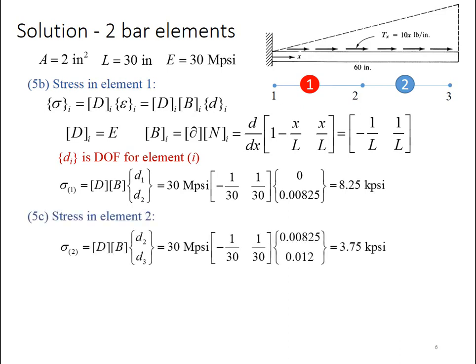Stress in element 2, very similar process except here the degrees of freedom that I deal with are d2 and d3 because those are the nodes that connect to element 2. When I multiply that out, I find that the stress in element 2 is 3.75 kpsi. And this also makes sense because element 1 is getting pulled by all the force to the right of it, whereas element 2 is just being pulled by the force acting on that element.